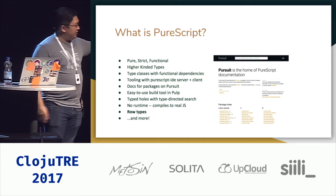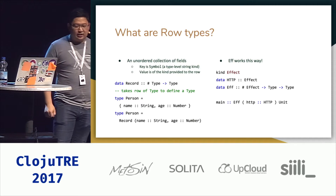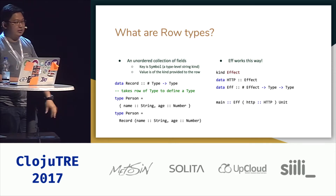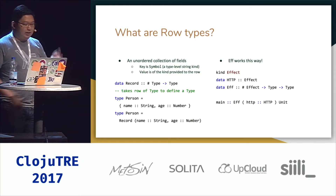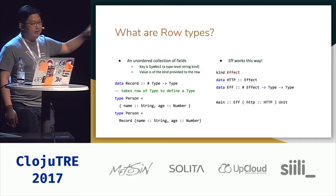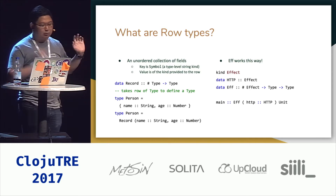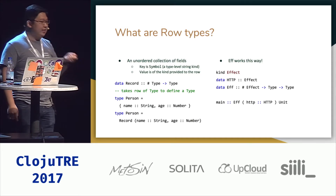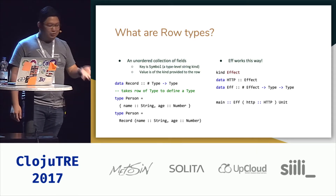The thing I'll be talking about specifically today is that PureScript has row types. Row types are an unordered collection of fields where the key is a symbol — a type-level string — and the value is the kind. Typically if you're working with a record, it's going to be type. For example, the record data type is created using a row of type and gives you back a type. So a type alias for Person with fields name string and age number is actually a Record being constructed with that row passed in.